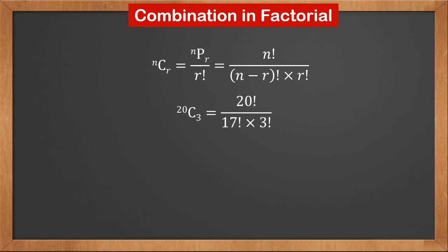20C3 is 20 factorial over 17 factorial times 3 factorial. 32C4 is 32 factorial over 28 factorial times 4 factorial.